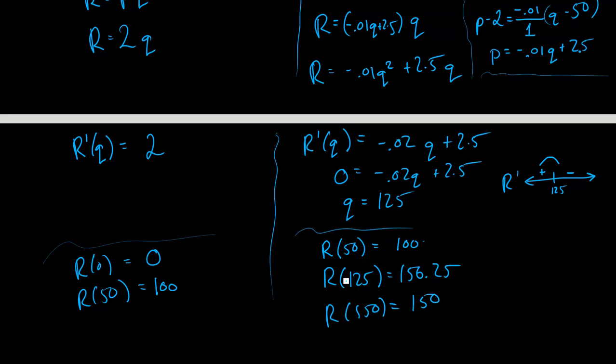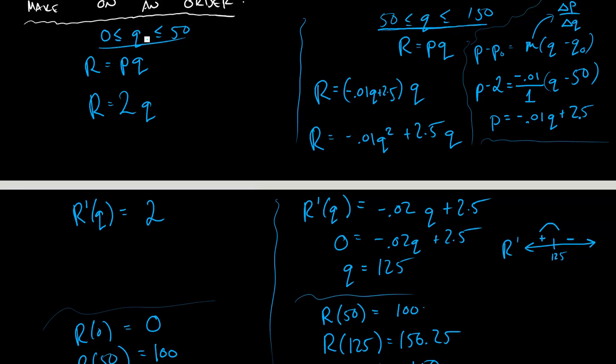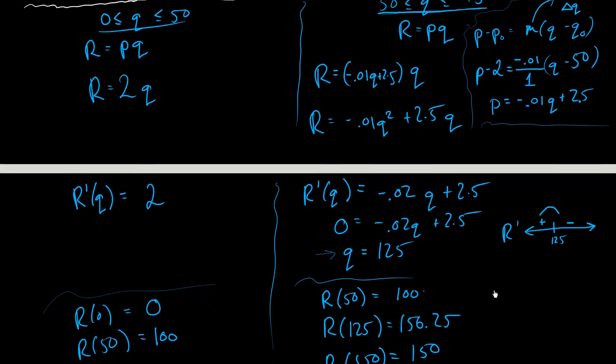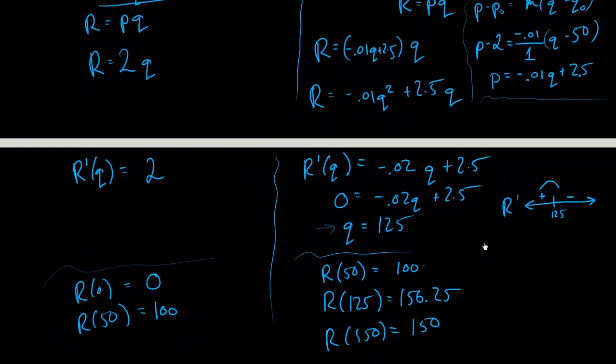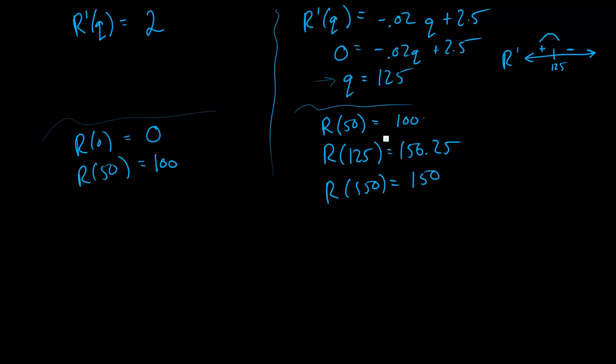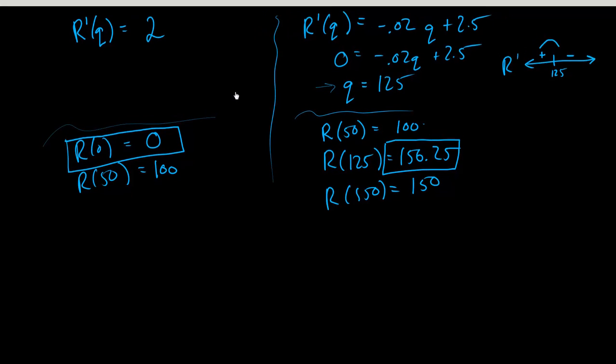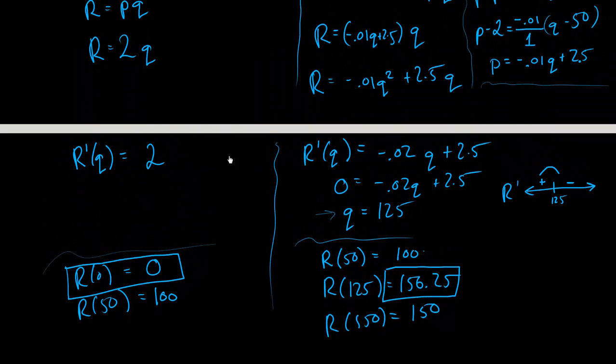And so what we've done here is we've checked all our critical points in the two intervals, our only critical point actually being this one. And we've checked all the endpoints, so the 0, 50 here, and we've checked the 50 and the 150 there. And we've seen that, remember the original question was largest and smallest revenues, that our largest revenue was here at 156.25, and our smallest revenue was of course 0.